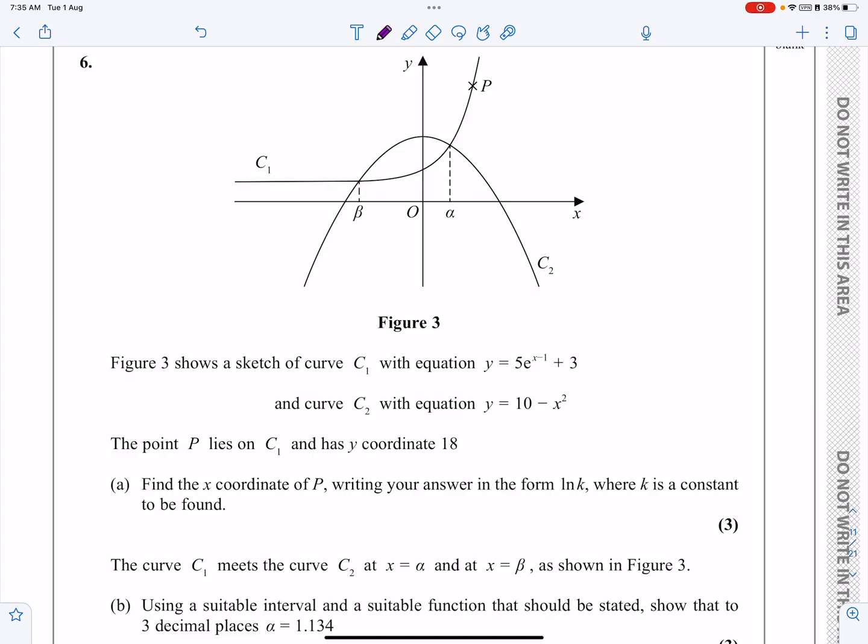We've got these two curves that meet at alpha and beta. That's going to be for the rest of the question. But for part A, we can just focus on point P here. It says P lies on line C1 and has the y-coordinate of 18. We want to work out the x-coordinate. That's dead straightforward.